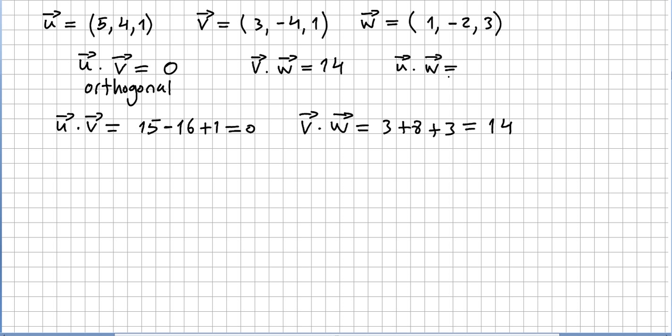And what about u times w? So u times w, we are going to get 5 minus 8 plus 3, this is 0. So this one is also orthogonal.